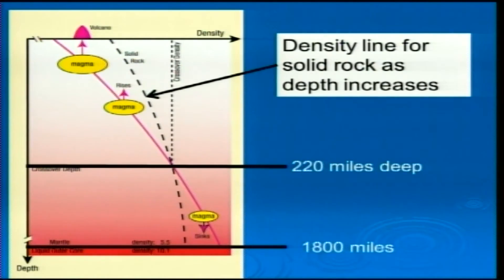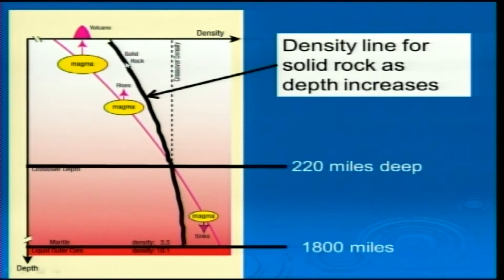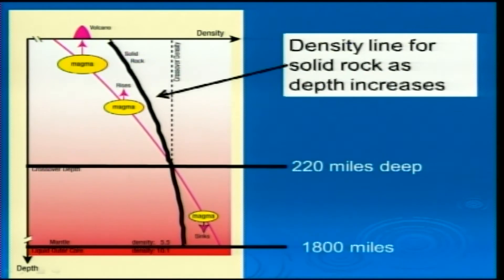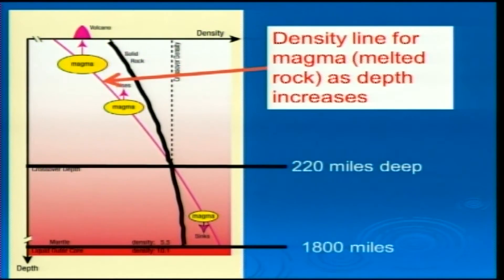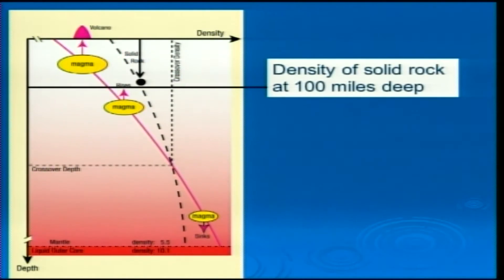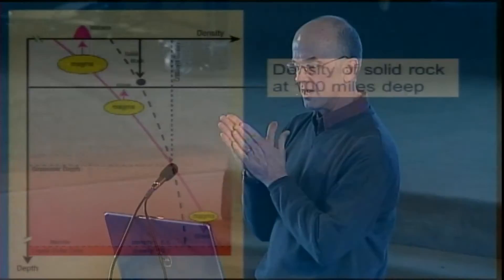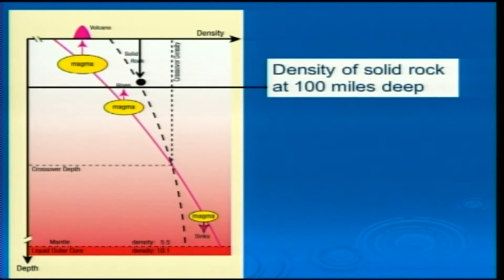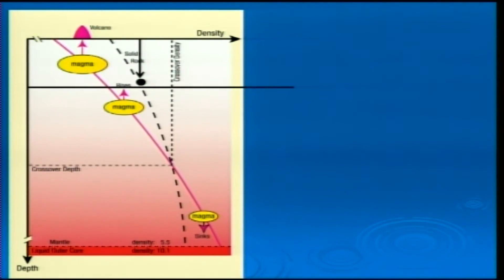This is the density line for solid rock as you go deeper. The further you go to the right, the more dense the rock is. Rock that changes state to liquid is called magma, and as soon as rock melts and turns into magma, this is the density line that governs magma. Let's consider what happens at 100 miles deep — which is in the mantle but above the crossover depth. Joe Rock is sitting there until an earthquake happens, and the slippage along the fault line melts this piece of rock. It's still 100 miles deep, so it melts into magma and moves left on that density line over to the liquid line.